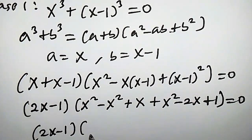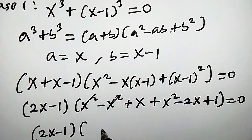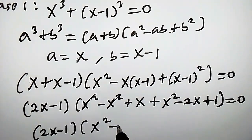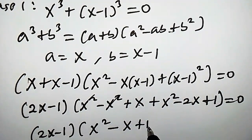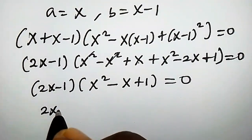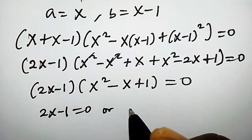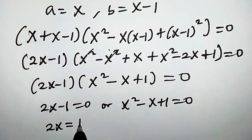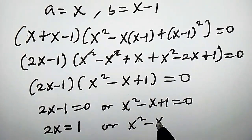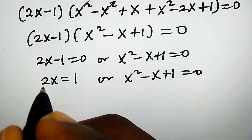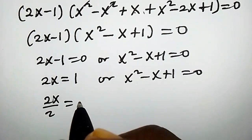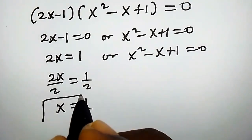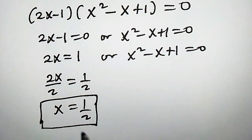Simplifying inside the bracket, we have 2x minus 1 times x squared minus x plus 1 equals 0. So either 2x minus 1 equals 0, giving 2x equals 1, and dividing both sides by 2 we get x equals one half. This is the first solution and it is real.